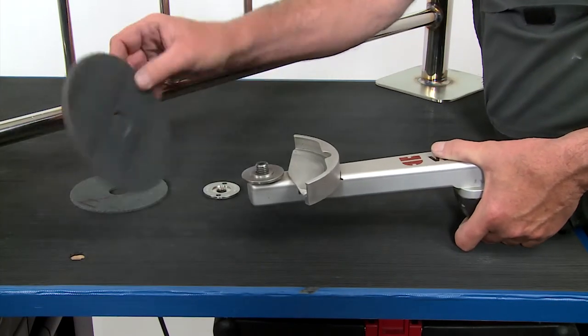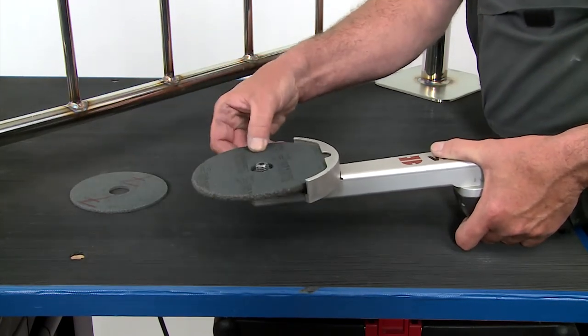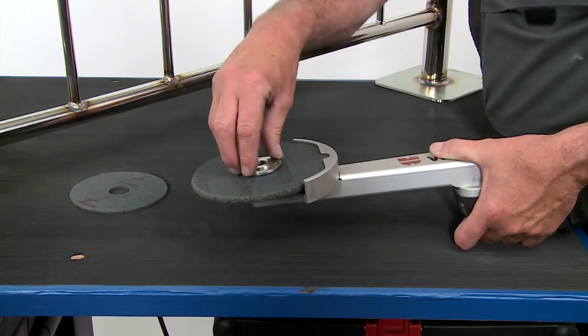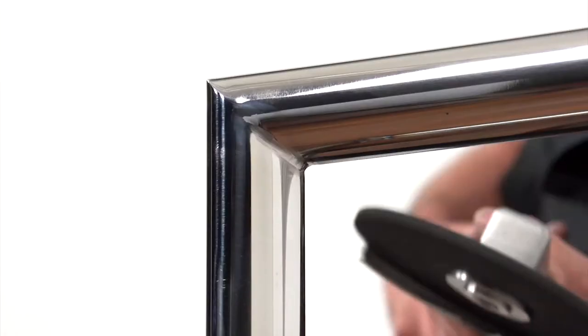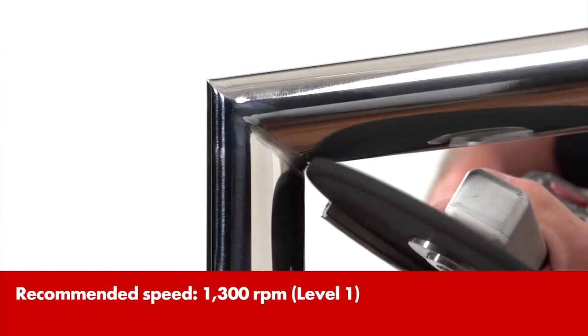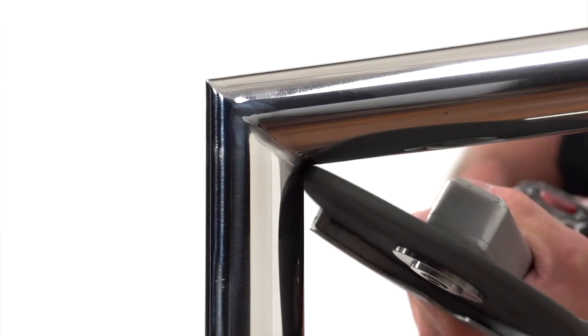Now change to a disc with a hardness grade of 5 in 6mm to carry out finer work. Work on the weld seam again with this. Take special care to even out all transitions.